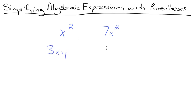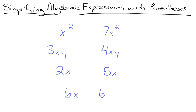3xy and 4xy are also examples of like terms, and so are 2x and 5x. Now an example of two terms that are not like terms would be 6x and 6x squared. Even though they have the same coefficient and the same variable, the variables are not raised to the same power, so these two terms are not like terms.